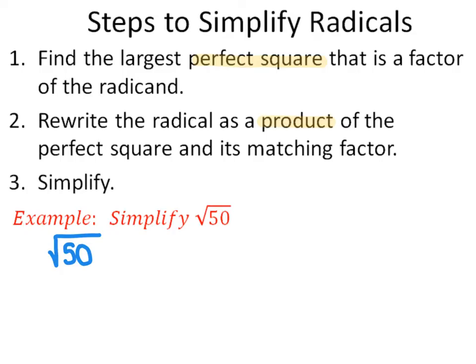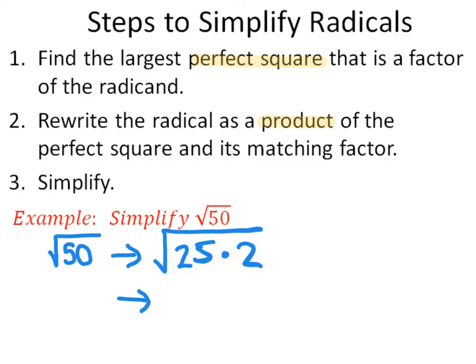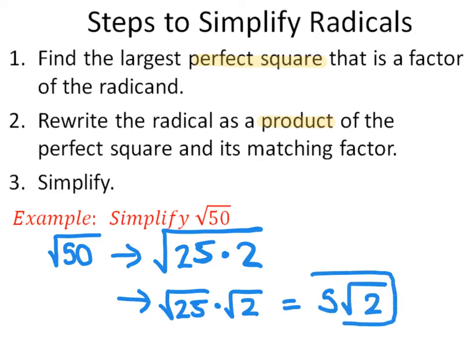The largest perfect square that divides into 50 evenly is 25. So I can rewrite this as the square root of 25 times 2, and split up the radical so it becomes the square root of 25 times the square root of 2. If I simplify the square root of 25, it becomes 5 square root of 2, and that would be your final answer.